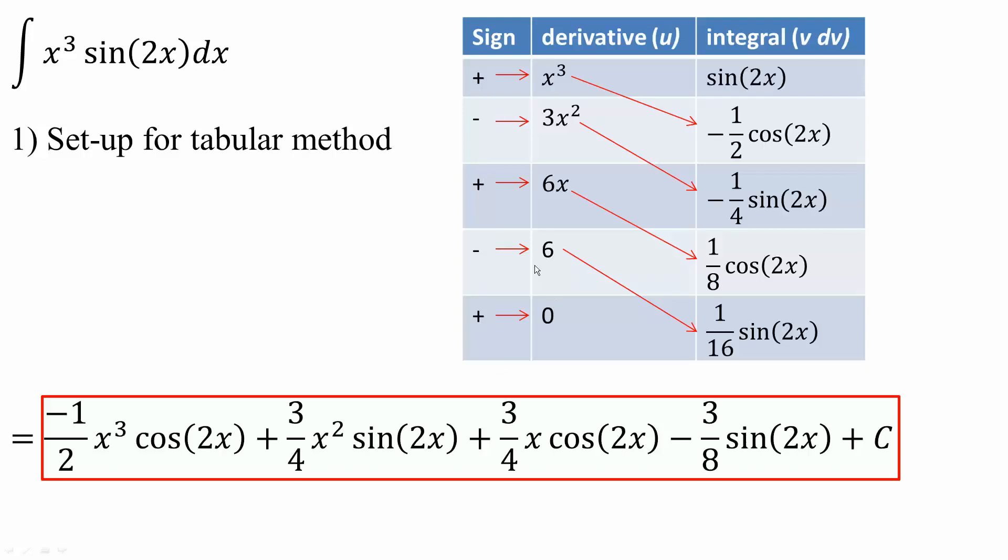In the derivative column, we choose which term to take the derivative of and which term to take the integral of. We can easily take the derivative of x cubed, and we can easily take the integral of sine 2x. So we'll put x cubed in the derivative column and sine 2x in the integral column.